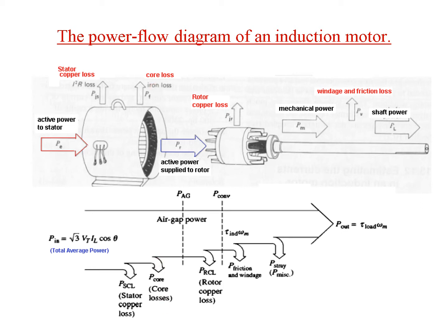After these two losses, whatever is available is the air gap power inside the stator. The air gap power is applied to the rotor, which undergoes the rotor copper losses. The power available at the output of the rotor is called the power converted — where electrical power is converted into mechanical power. It further undergoes windage and friction loss and stray power loss, and then becomes the output power available at the shaft.